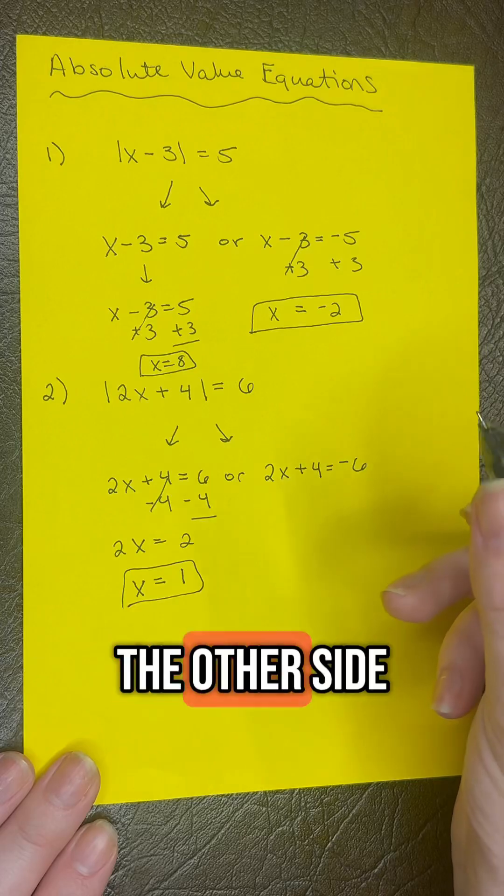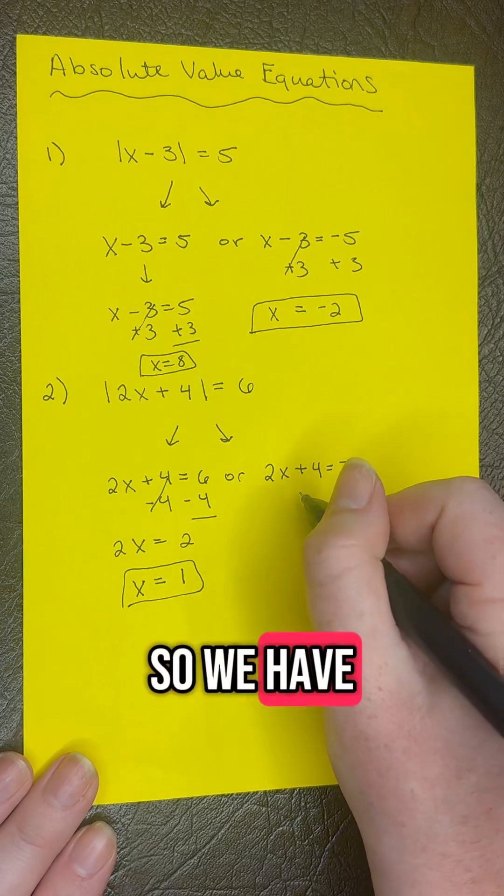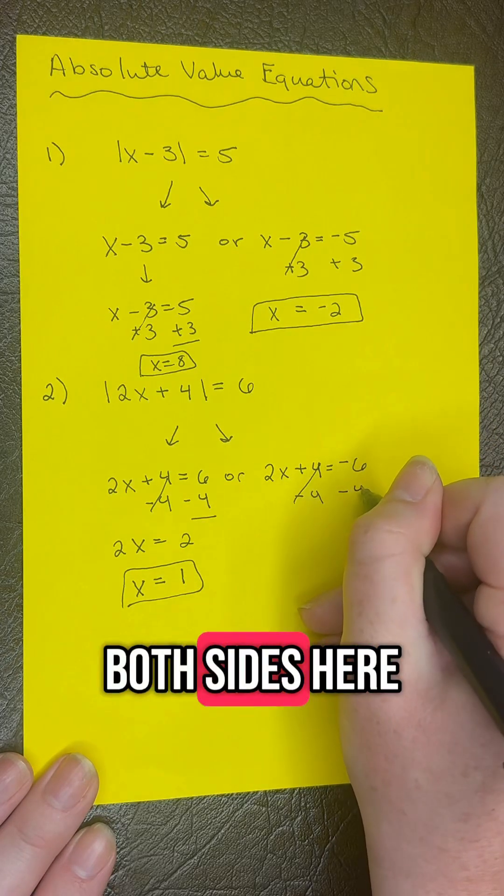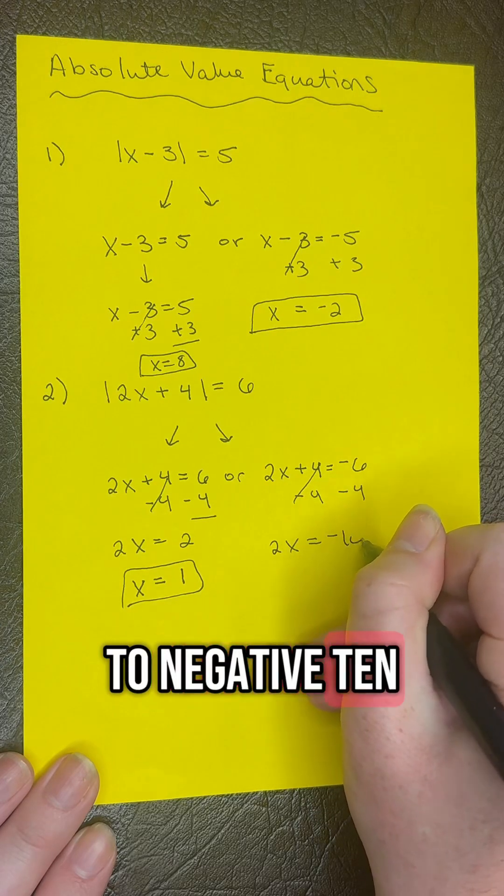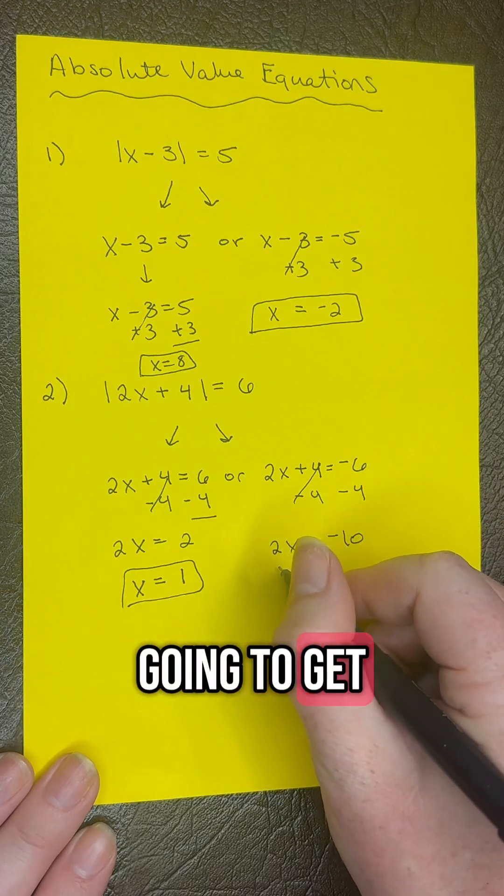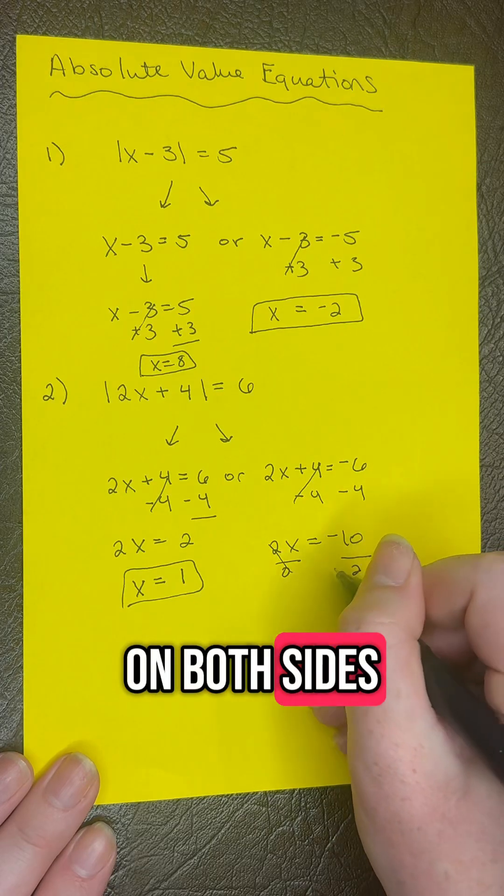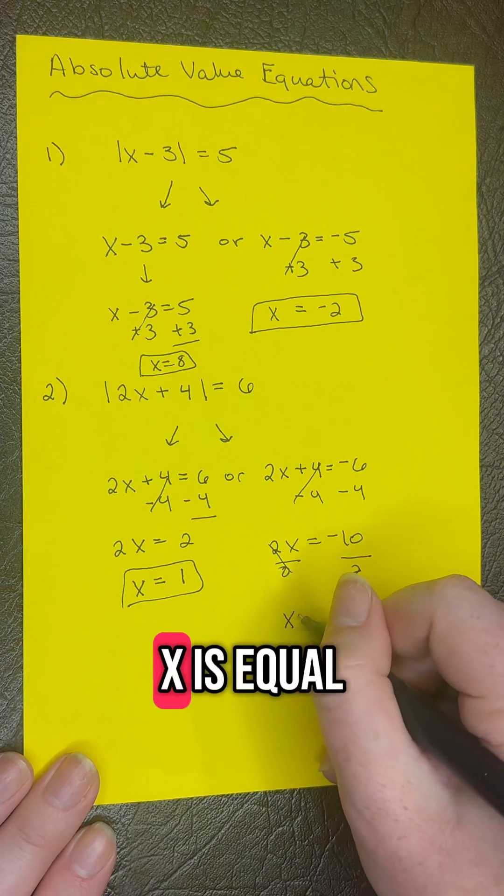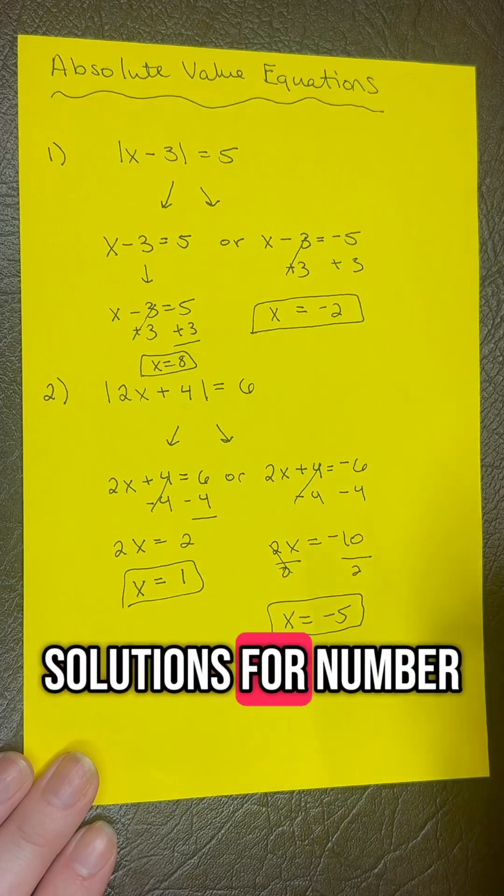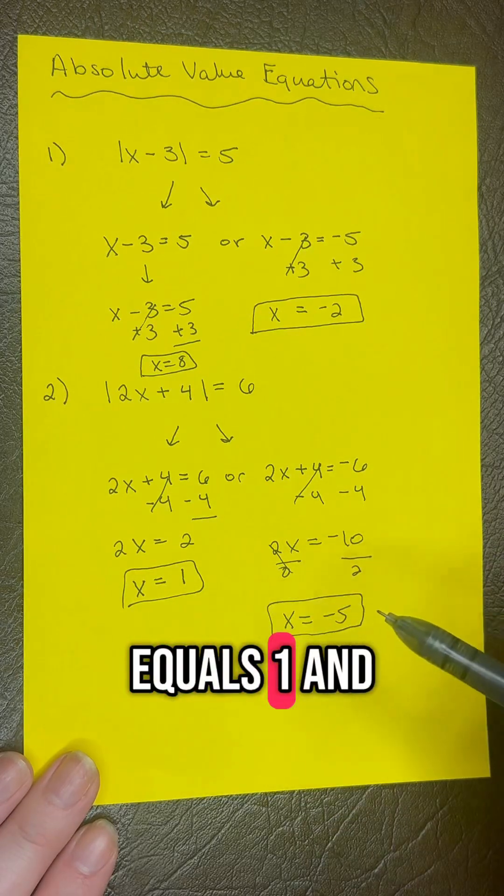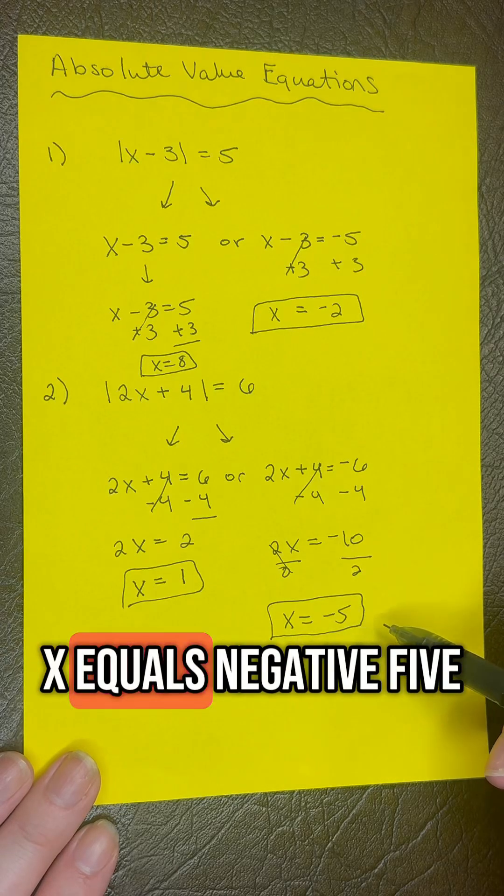Now let's solve the other side. Subtract 4 from both sides, and we get 2x equals negative 10. Then divide by 2 on both sides, and we get x equals negative 5. So our two solutions for number 2 are x equals 1 and x equals negative 5.